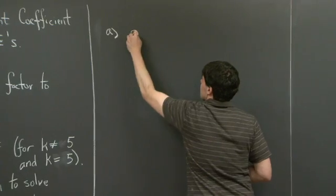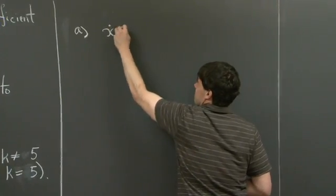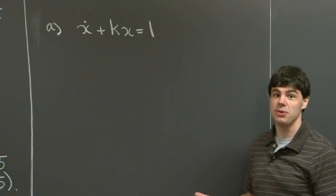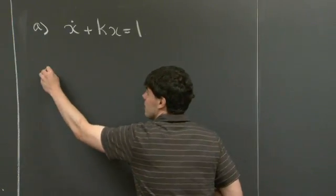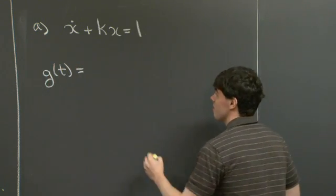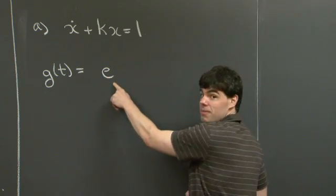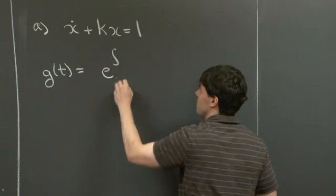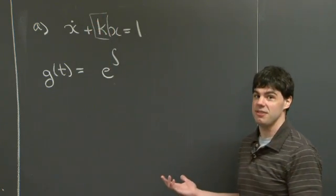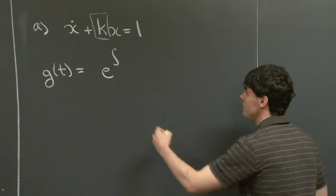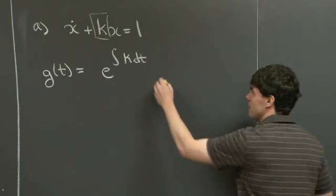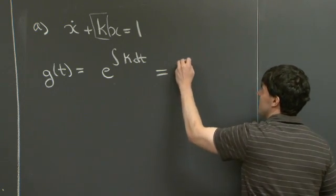For Part A, we have the equation x-dot plus kx equals 1. The first step is to compute the integrating factor. The integrating factor, which I'll call g of t, is always going to be an exponential of the integral of the function that appears in front of x. In this case the function is just a constant — it's k. So we have e to the integral of k dt, which gives us e to the kt.